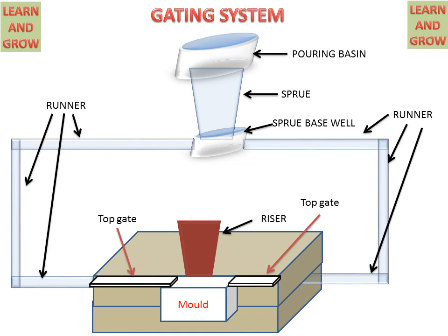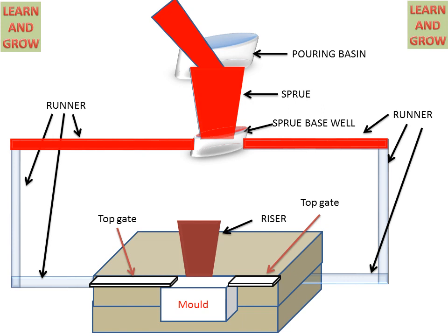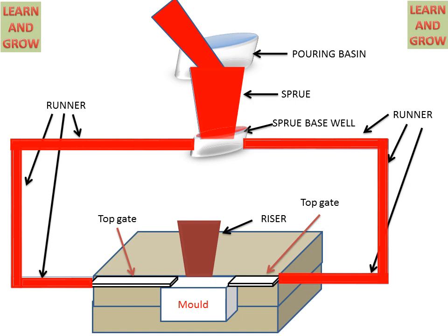Now we will see the working of the gating system. Molten metal is filled from the pouring basin and goes to the sprue. From the sprue base well it is distributed to the runners, and from the runners it goes to the gate system. Through the gate it fills the mold cavity, and the riser indicates when the cavity is totally filled. This is the top gate system.